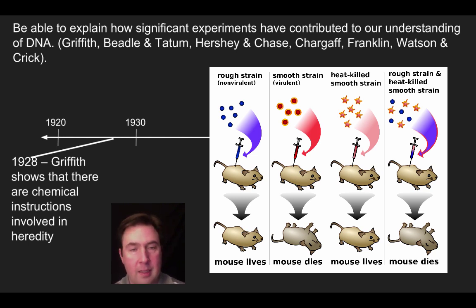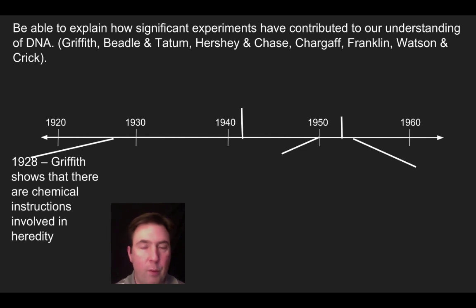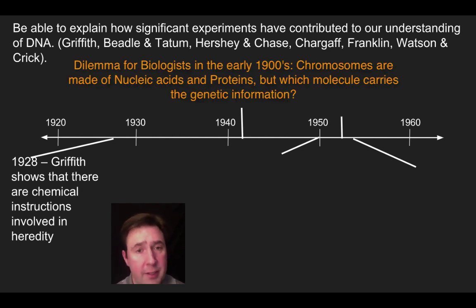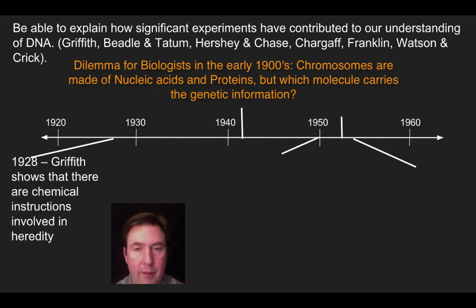This was known as some sort of factor, sometimes referred to as the transformation factor. Later on in the 1940s, another group of scientists led by Avery came along and actually isolated that it was the DNA within that strain that was being passed on to the next generation. This compelling work suggested that of the material making up chromosomes — both nucleic acid and proteins — it was the DNA inside the chromosome that contained the genetic material.